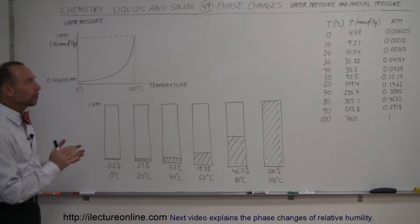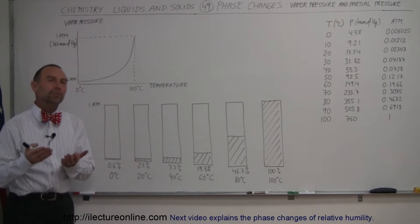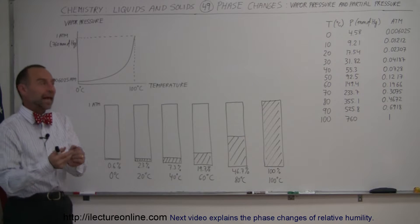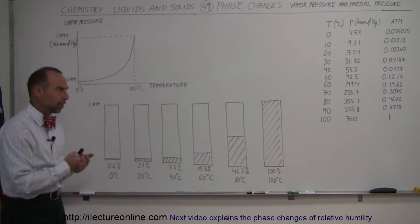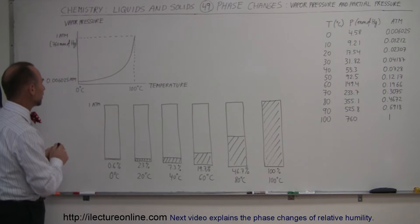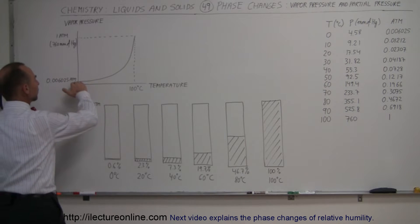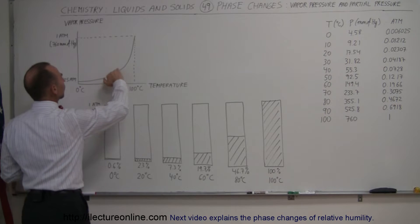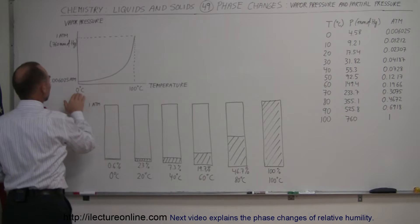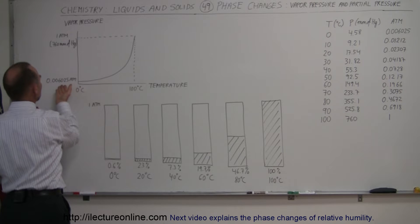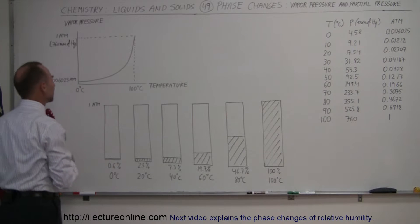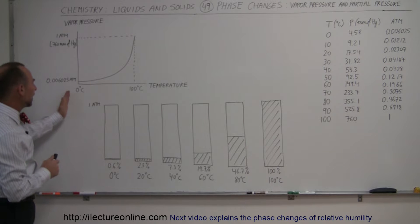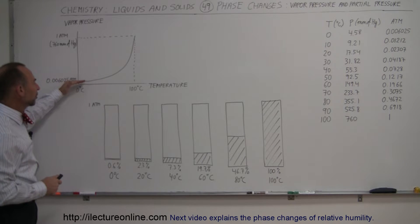Welcome to Electronline. Here we're going to talk about vapor pressure and partial pressure as it applies to the amount of pressure that water vapor can have in the atmosphere. Going back to this graph that we've seen before, it depicts the pressure of the vapor as a result of the temperature. For example, at zero degrees centigrade, vapor pressure can only be 0.006 atmospheres, which is a little bit over 4 mmHg, and as the temperature increases, the vapor pressure can increase.